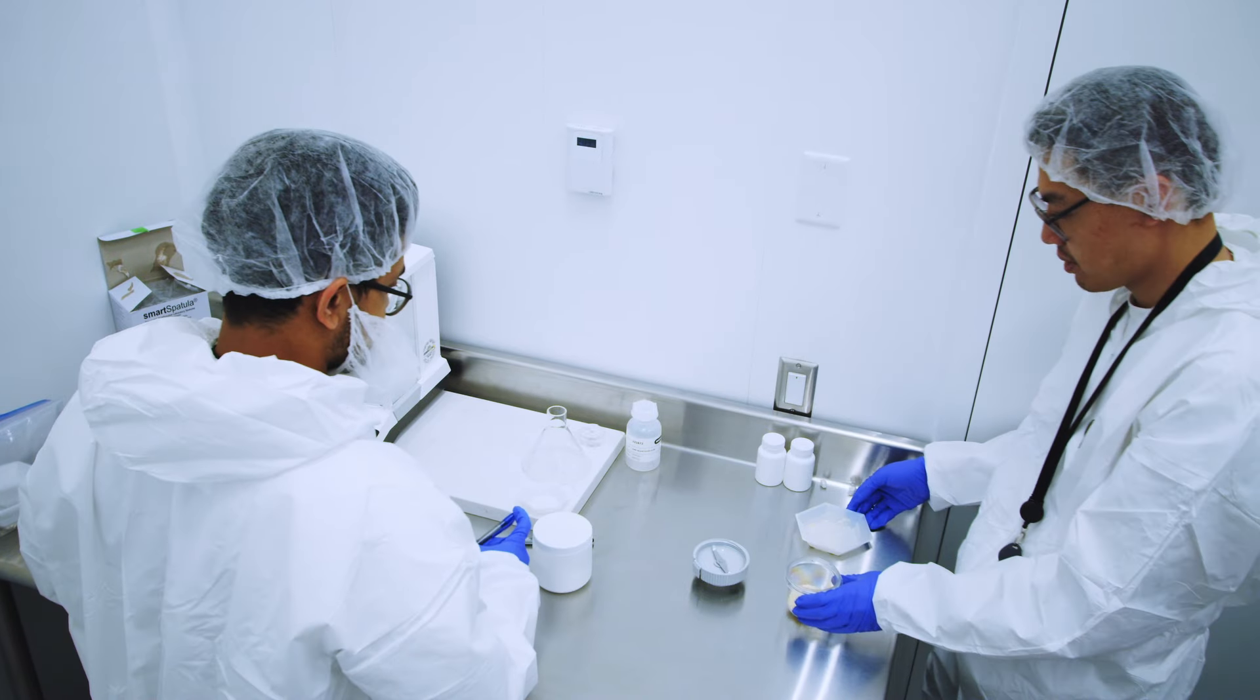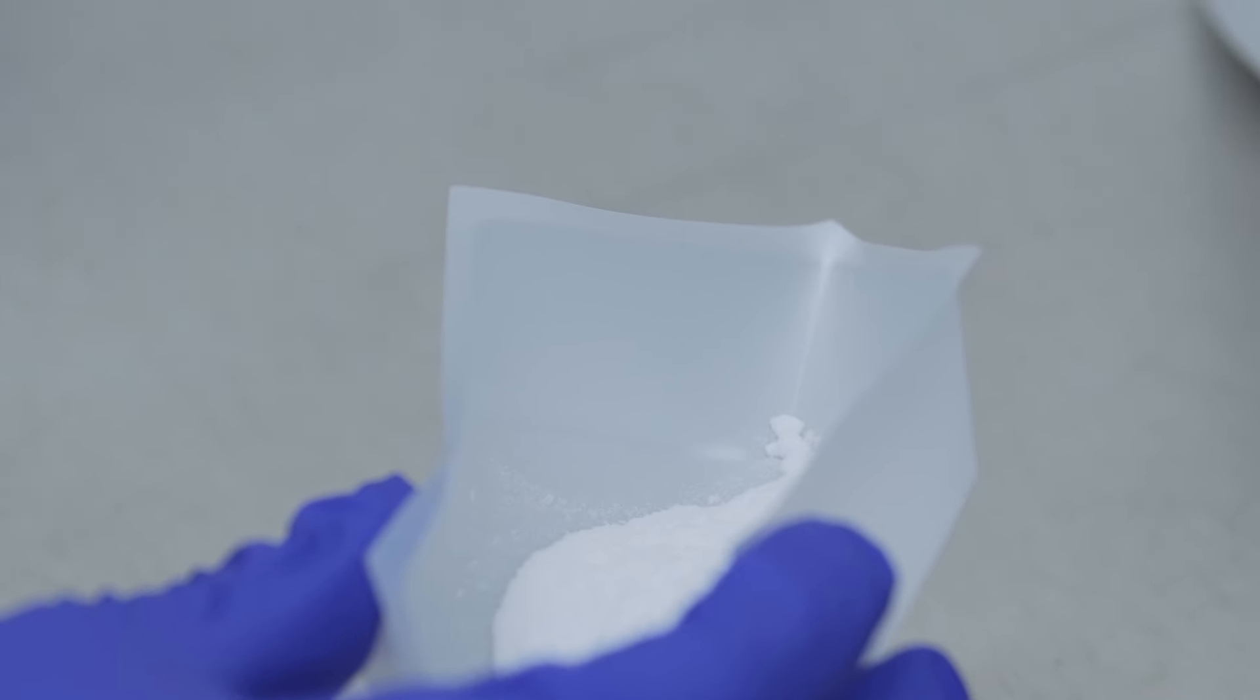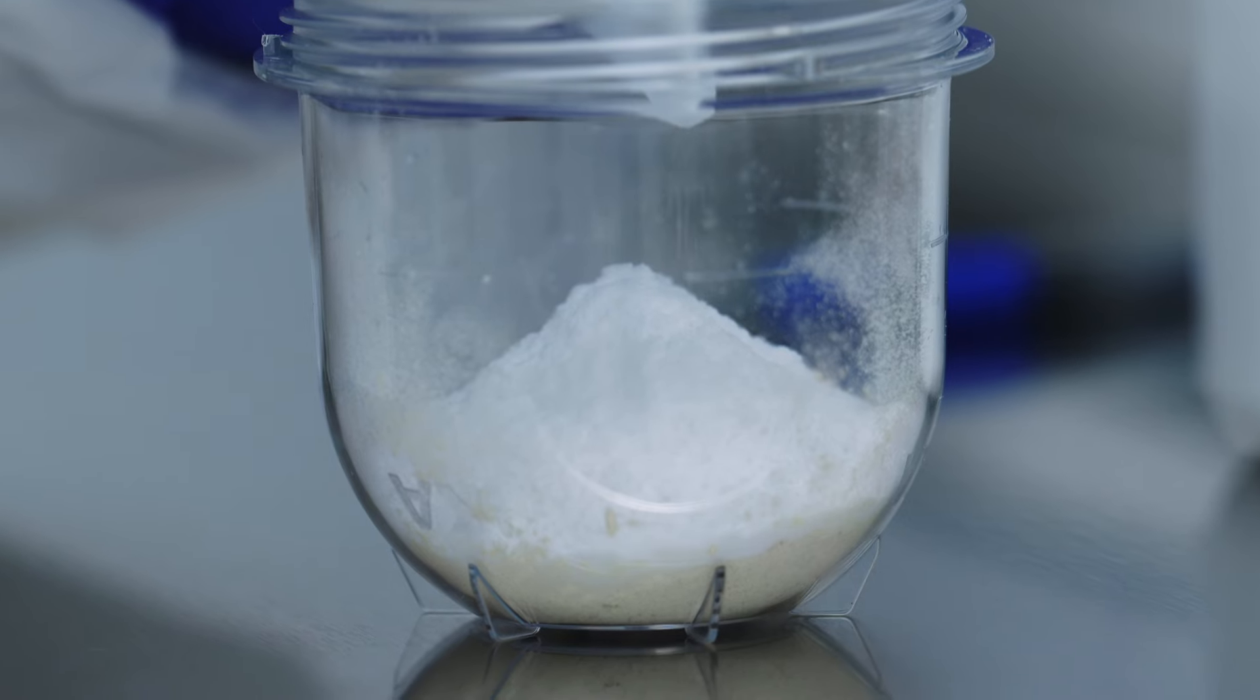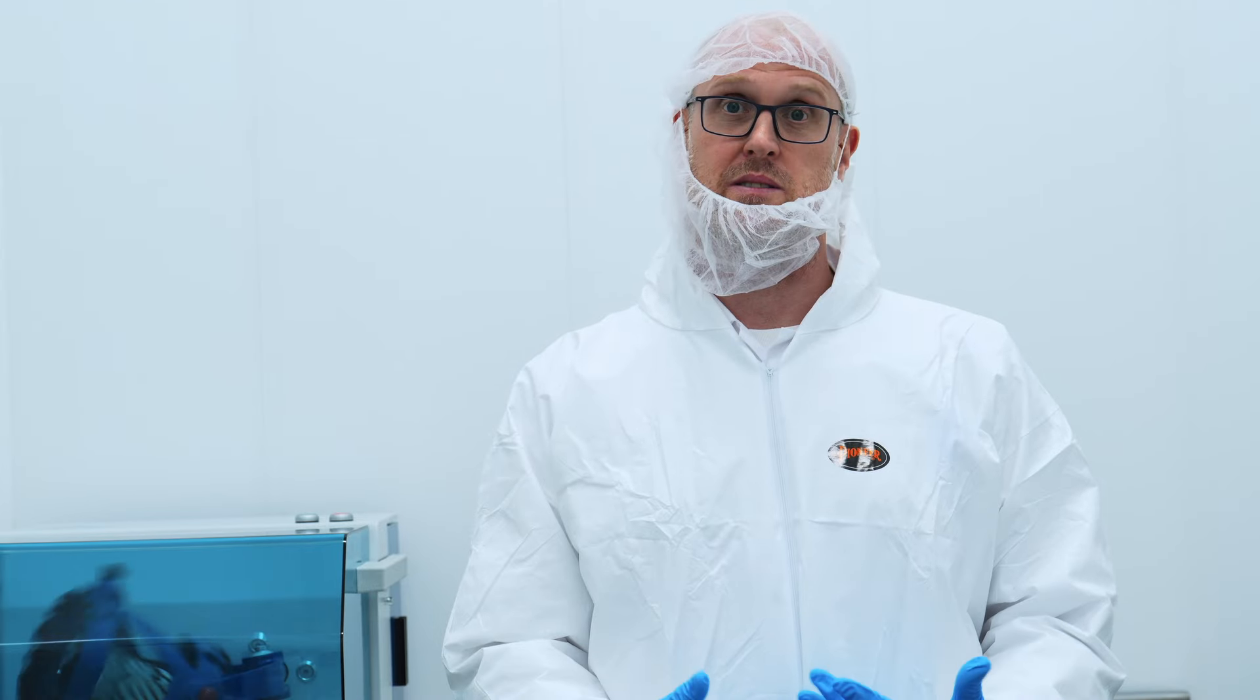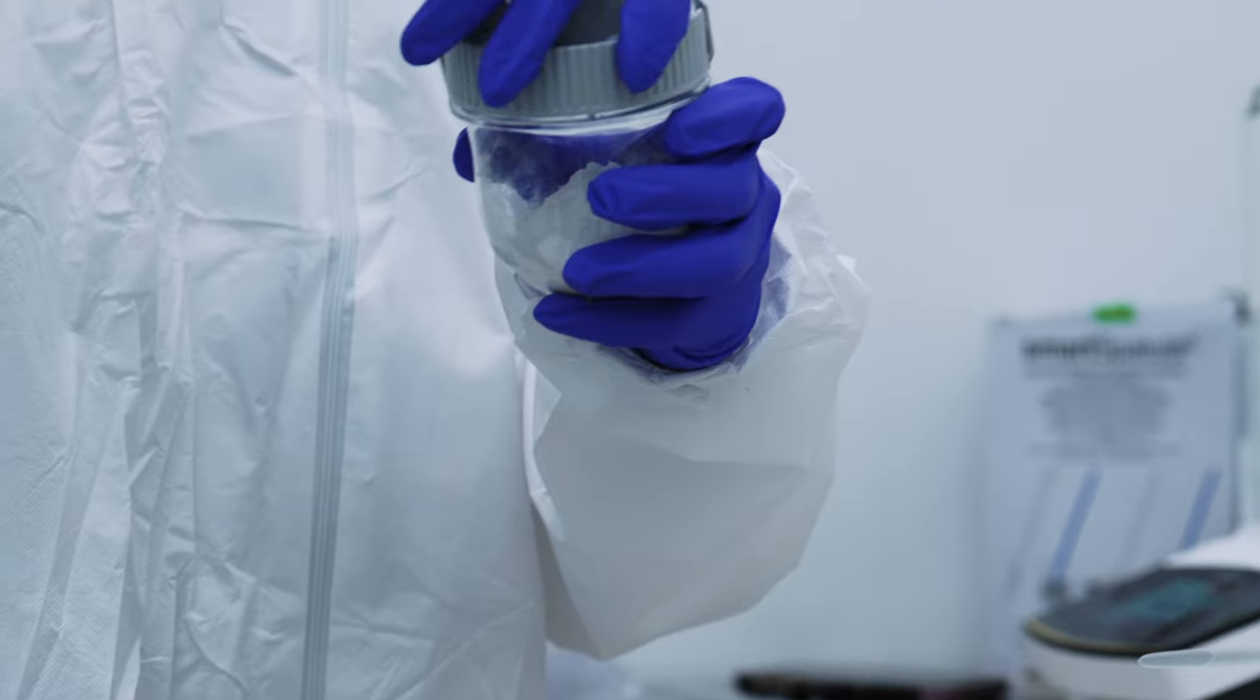Here we are in our GMP formulation room. This is where we take all of the active pharmaceutical ingredients, right now being the MDMA. The formulation process is basically we mix the API with a material called an excipient. It's another powder that will dilute the material so that when we fill the capsules, we are filling the entirety of the capsule. When we're combining these, we need to make sure that it's very homogeneous.